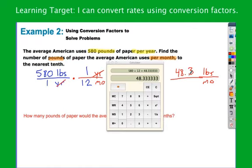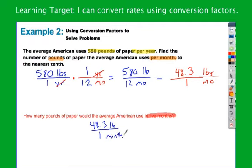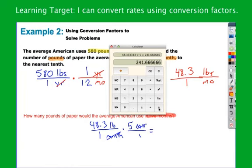Let's take that one more step — how many pounds would this be in 5 months? This is how many pounds in one month, so I take that rate and multiply it by 5 months: 48.3 pounds over 1 month, multiplied by 5 months over 1. Months cancel — I'm left with 48.3 times 5, which gives 241.7 pounds of paper in 5 months.